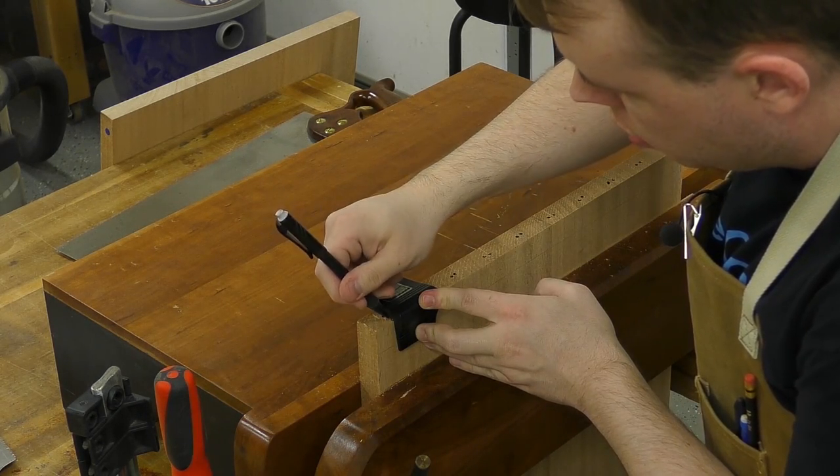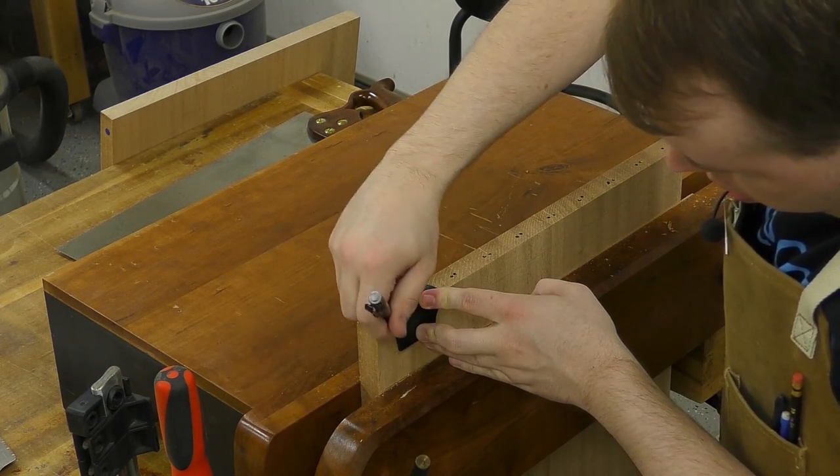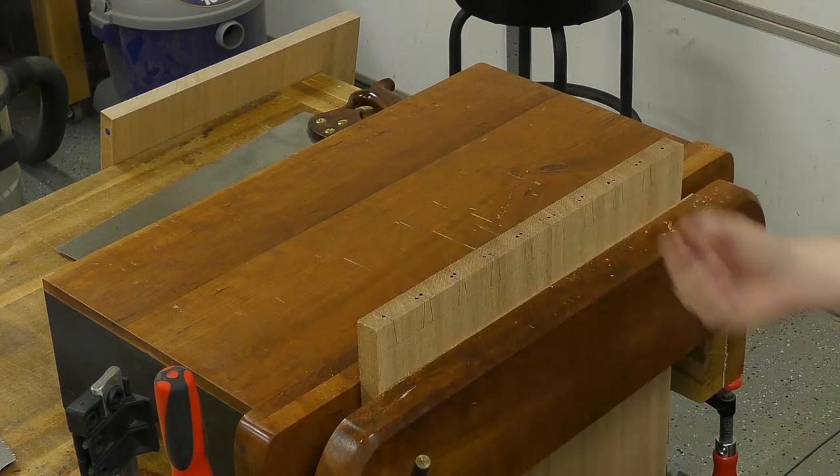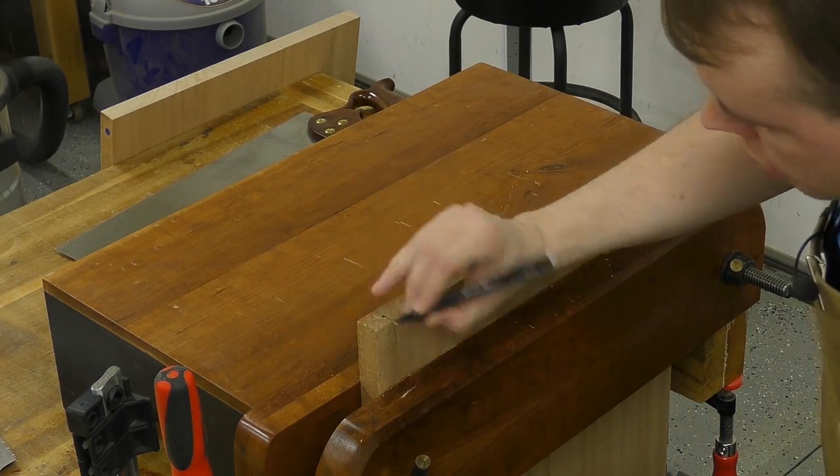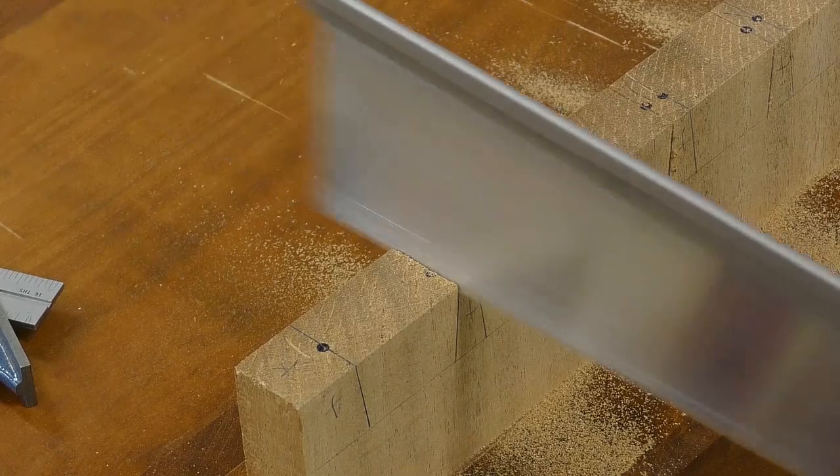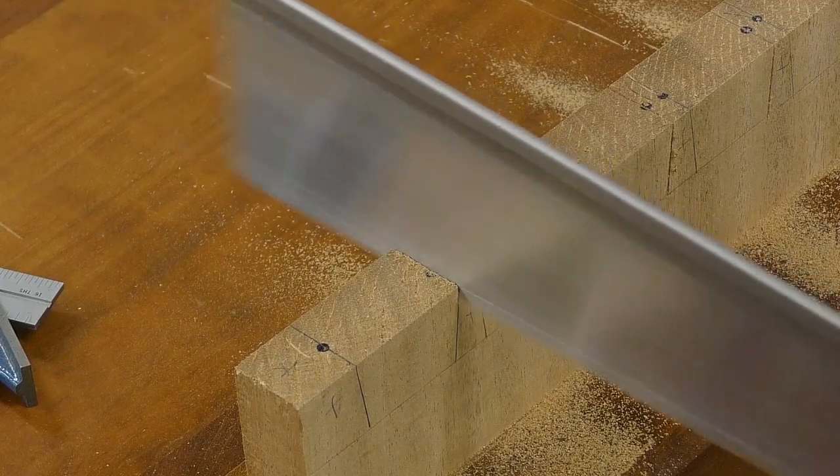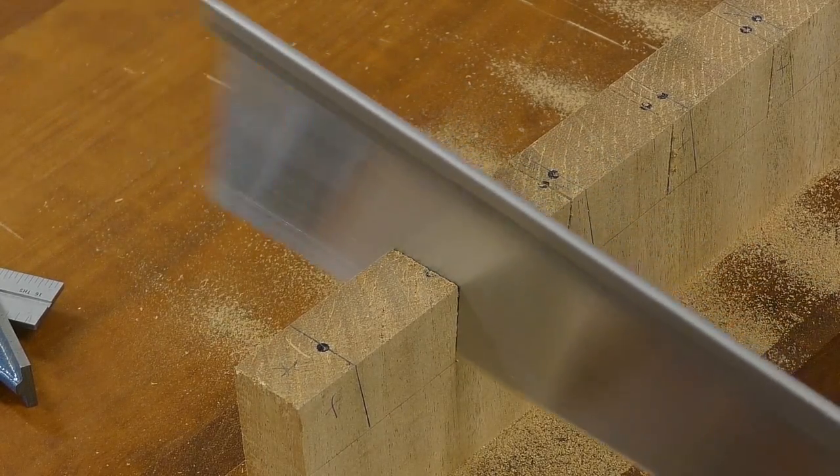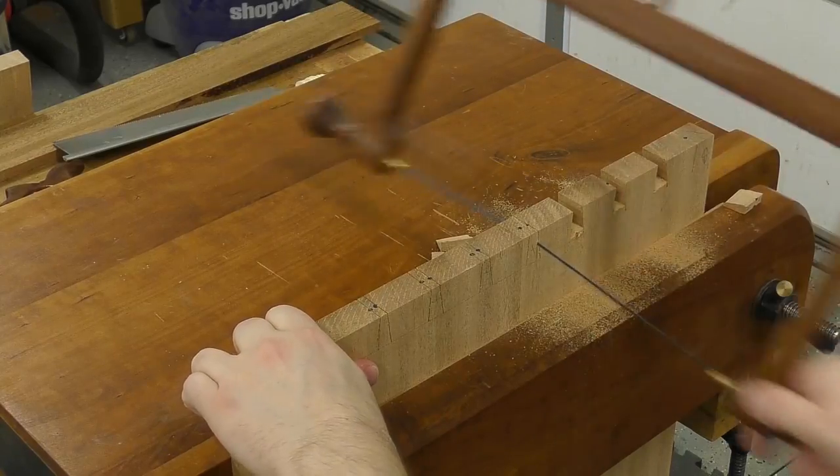Using a dovetail marker, I lay out the lines of the dovetails to use as a reference for cutting. And before cutting, it's always a good idea to mark your waste so you know what you need to remove and what needs to stay. And now I begin cutting the tails and I like to use a Japanese pull saw when I cut dovetails. I keep the saw straight across the end grain and angle it to the angle of the dovetails.